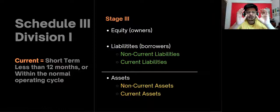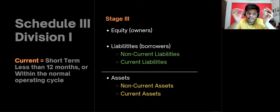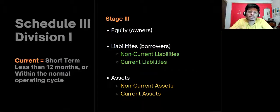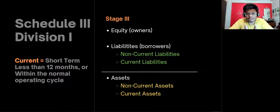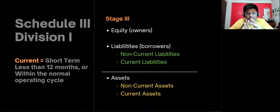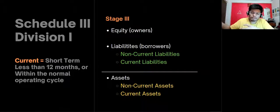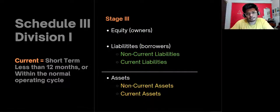In simple terms, any payments I have to make within 12 months, or any money I'll receive within 12 months, are current liabilities or current assets. Any money I'm getting or paying beyond 12 months falls under non-current assets or non-current liabilities.